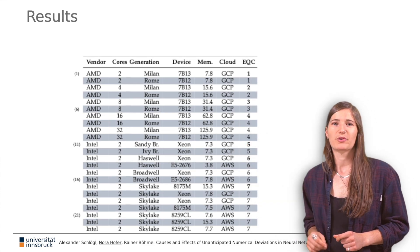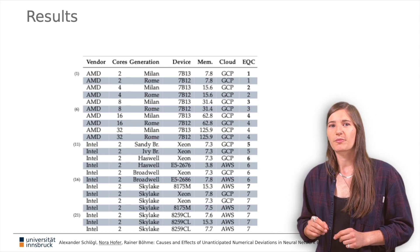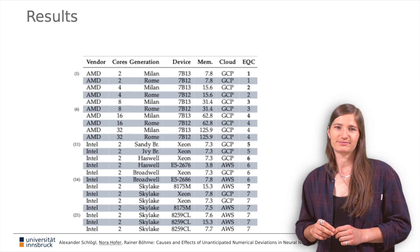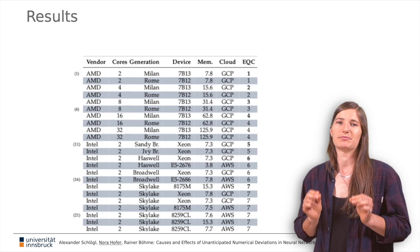This table reports our main result for 75 different platforms hosted on two commercial clouds and on-premise. Note that all platforms run exactly the same software and use exactly the same trained model.